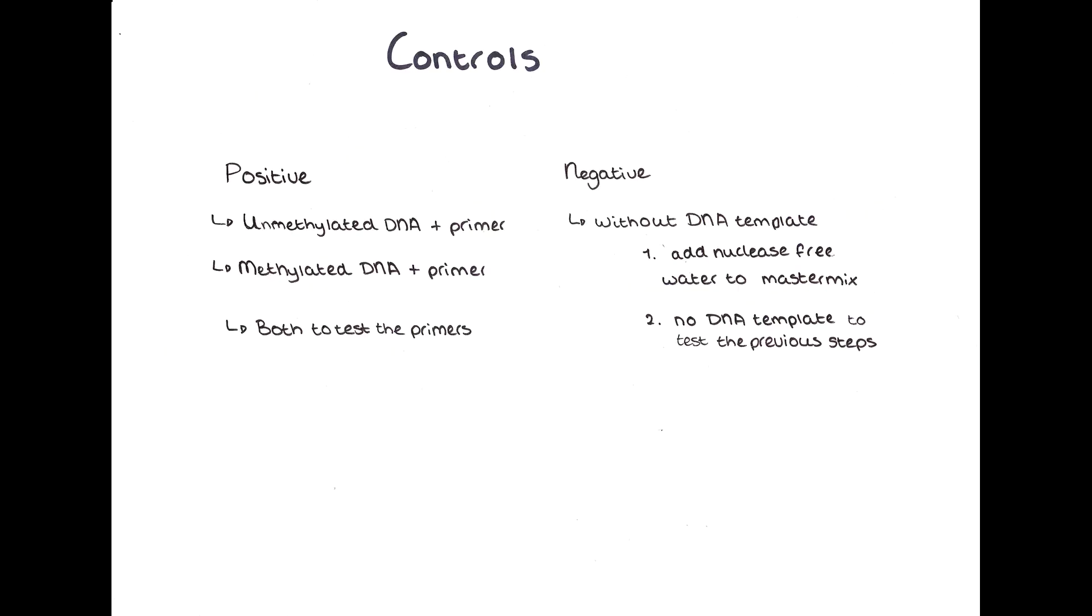A strand of methylated DNA, which is known to be fully methylated, will be used to test the primer of the methylated sequence. Its counterpart, the unmethylated primer, will be tested with a strand of unmethylated DNA. To test for any contamination, all previous steps are performed without the sample DNA, and to test the PCR master mix for contamination, nuclease-free water will replace the sample DNA.